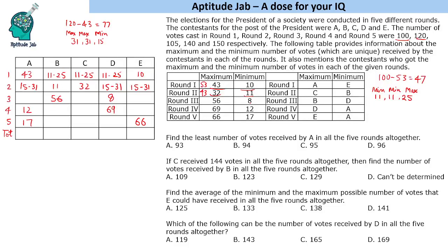For round 3, 64 votes are accounted for and total is 105. So 105 minus 64 gives 41 remaining. We can take 9, 9, and 23. So the range for the three remaining contestants is 9 to 23.